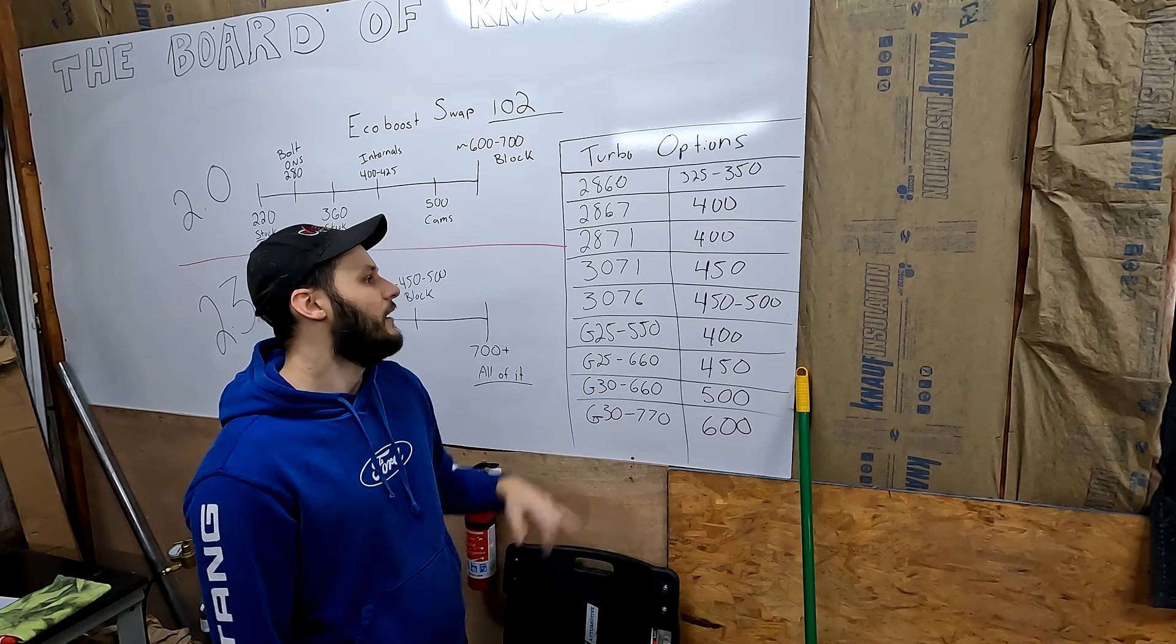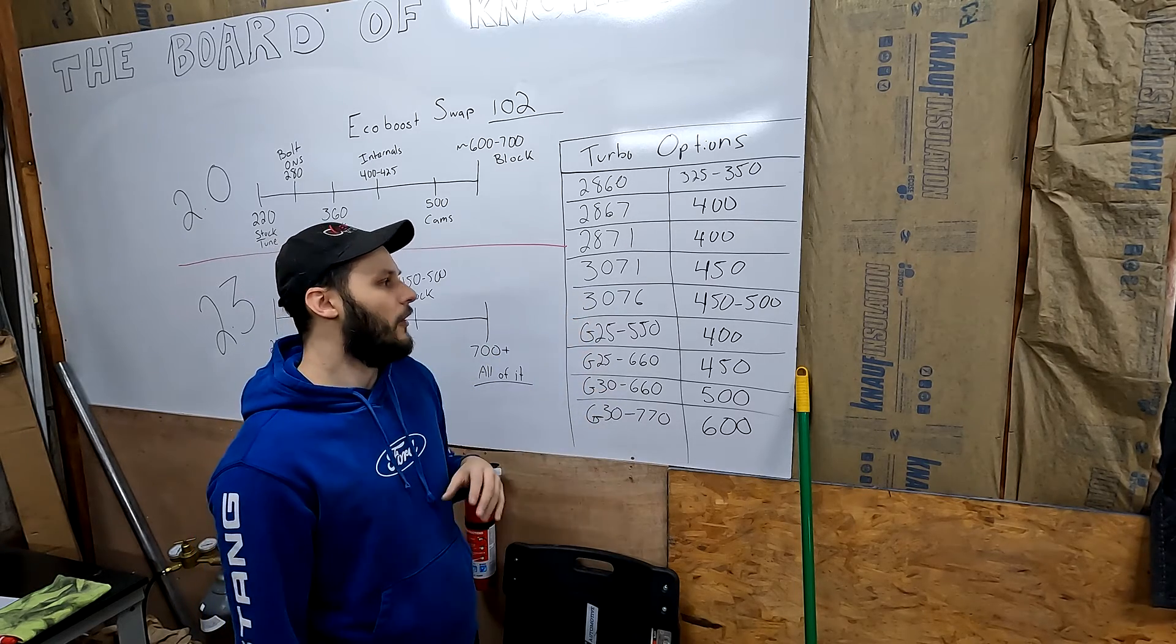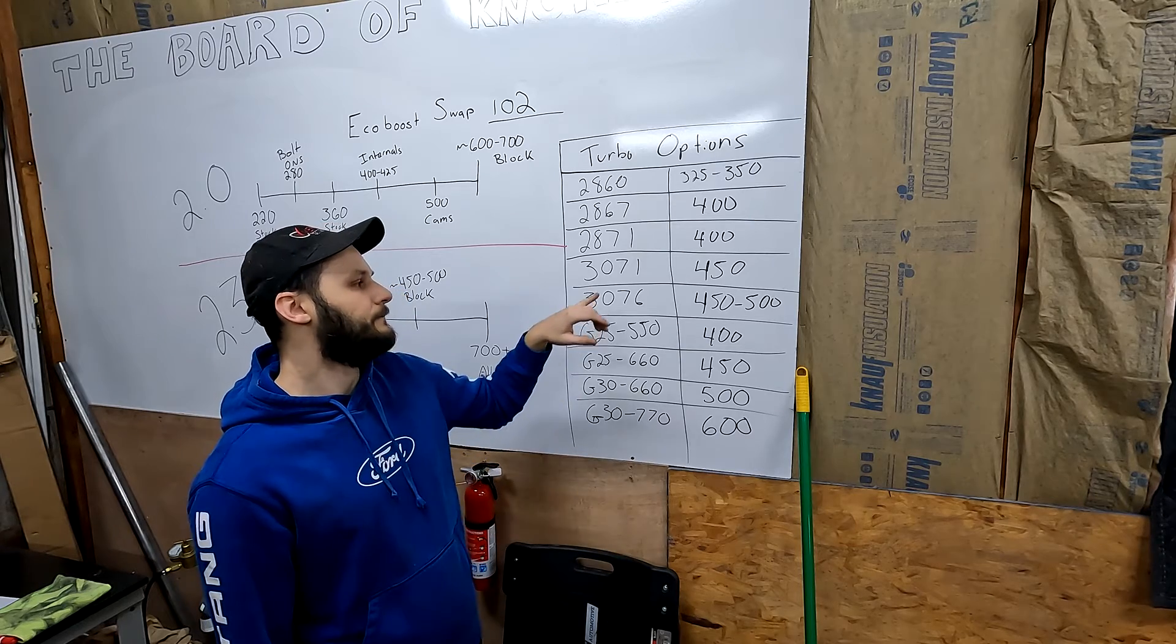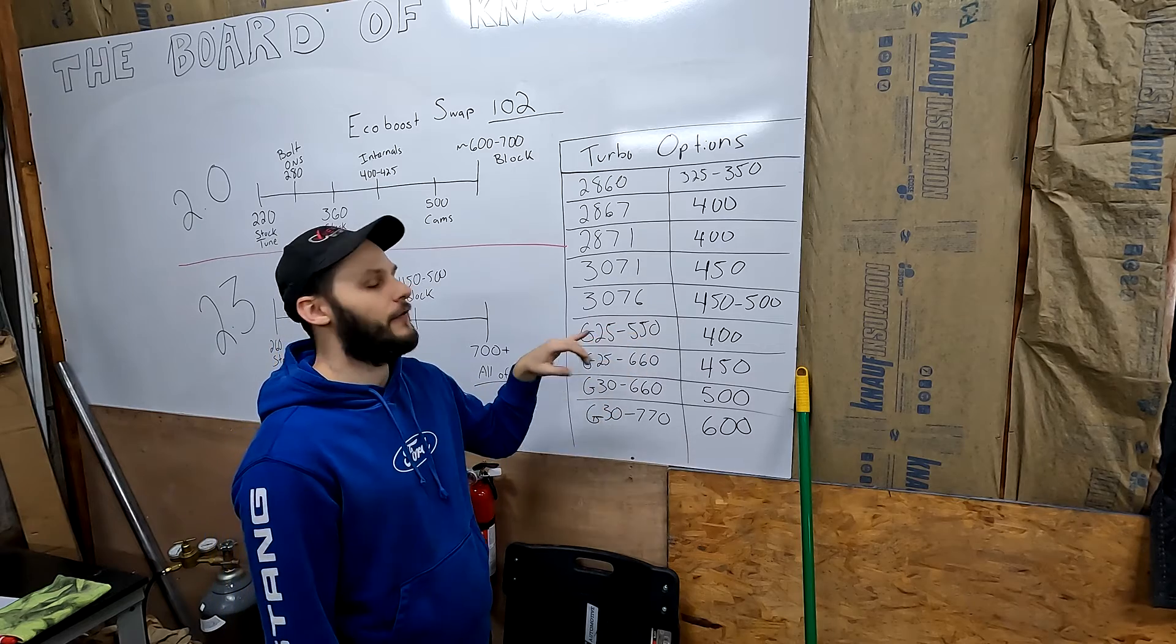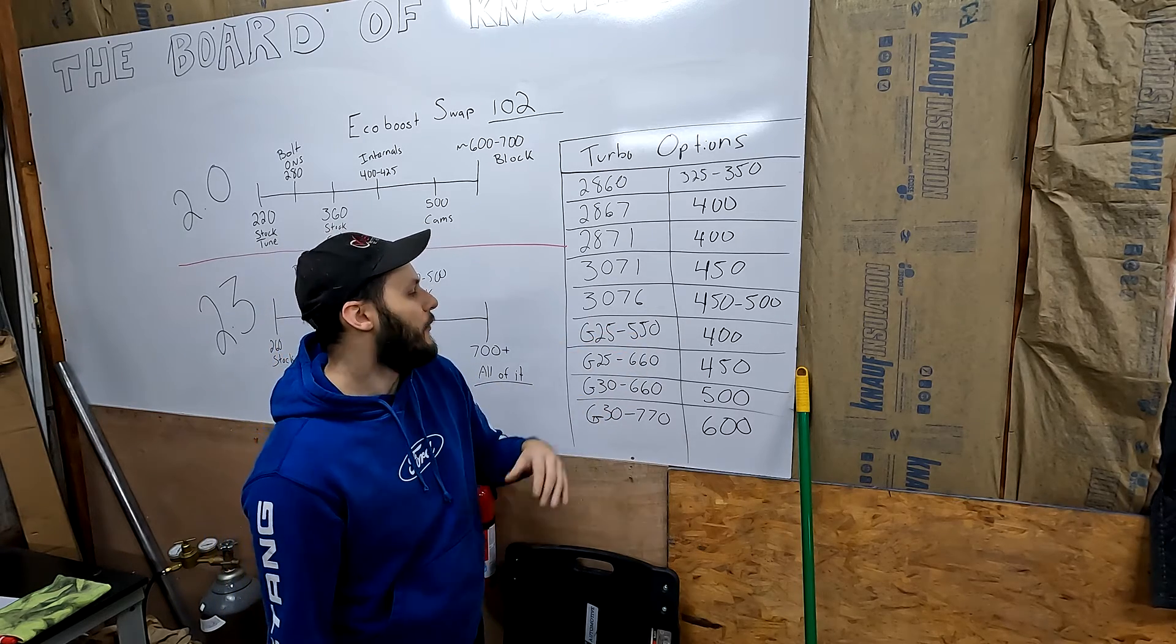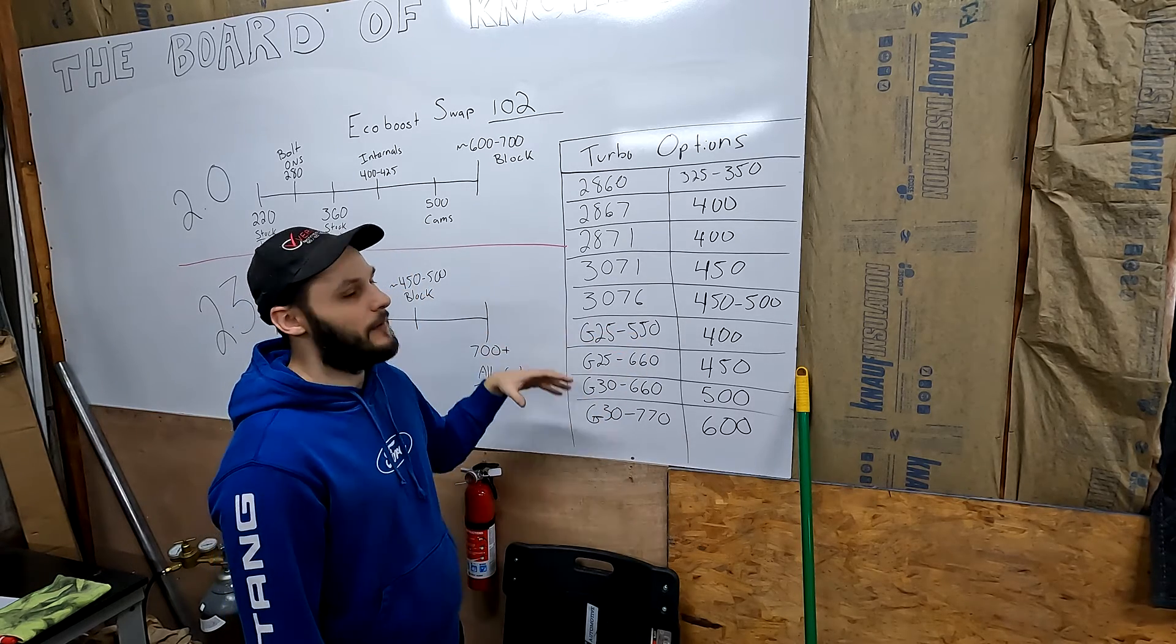The 3071, we're moving up to a larger frame turbo. We can make about 450 on the 3071 and 450 to 500 on the 3076.